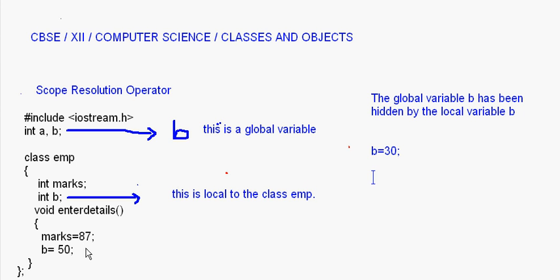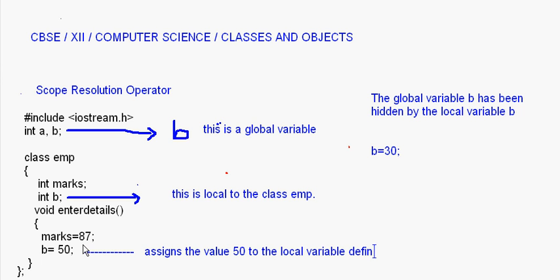So when I write b = 50 here, this assigns the value 50 to the local variable. Now the question is: how do we solve this problem? Suppose I want to assign the value 50 not to the local variable but to the global variable — what should we do?